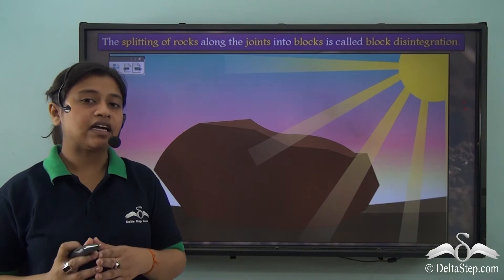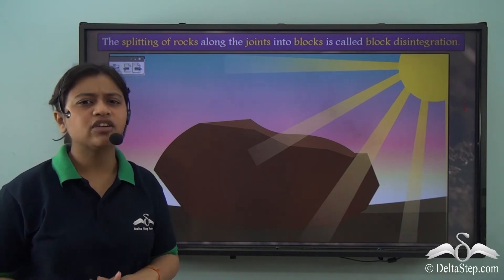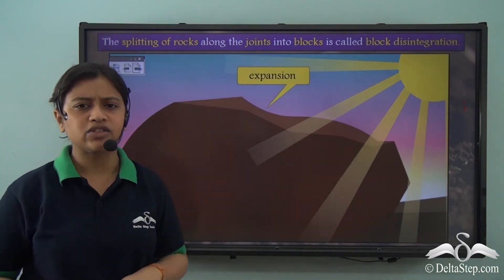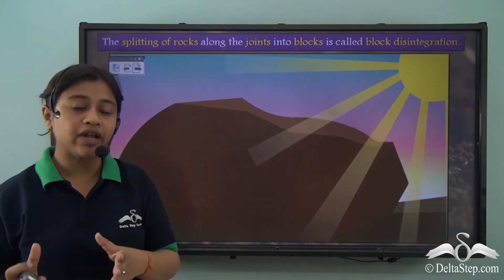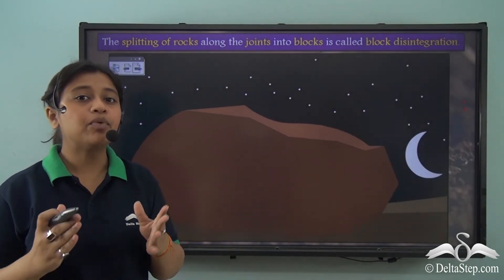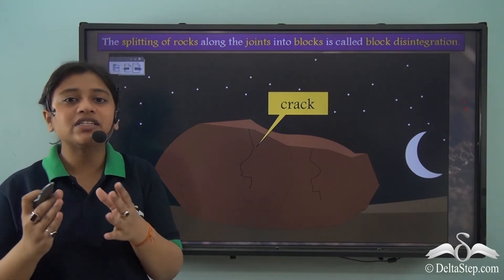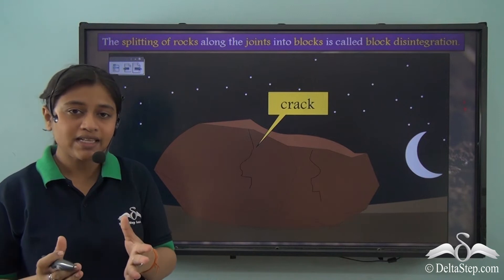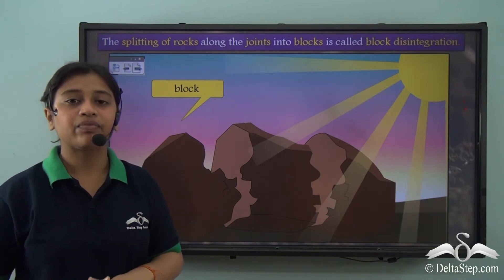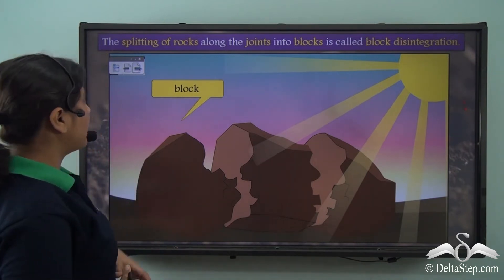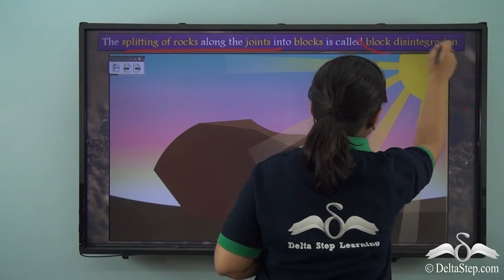Physical weathering can take place in many ways. The expansion and contraction of rocks tends to break the rock into smaller pieces. It sometimes happens that rocks tend to break along their joints into blocks. Since the disintegration is happening along the joints, leading the rock to break into blocks, it is called block disintegration.